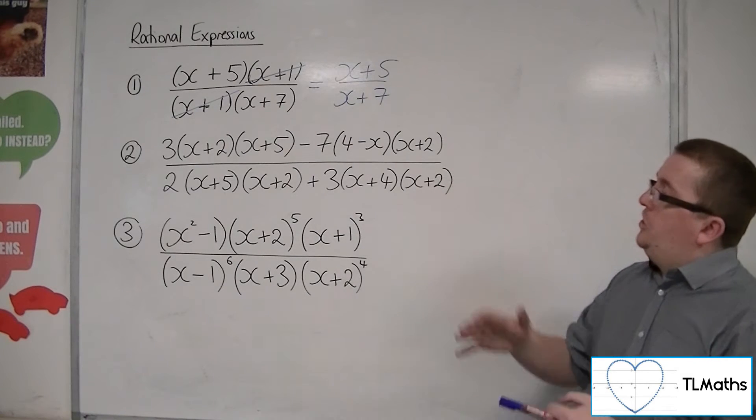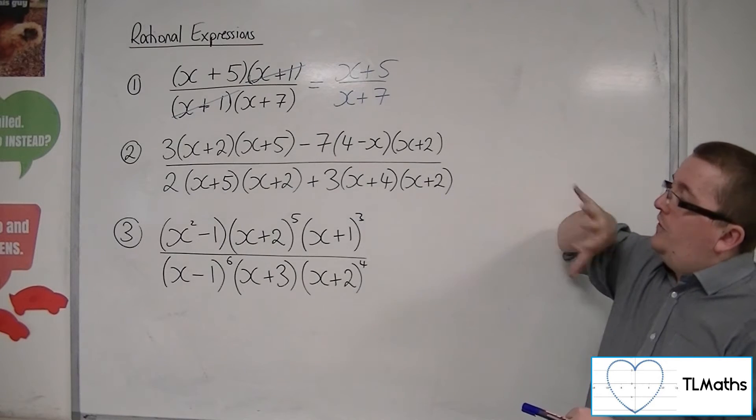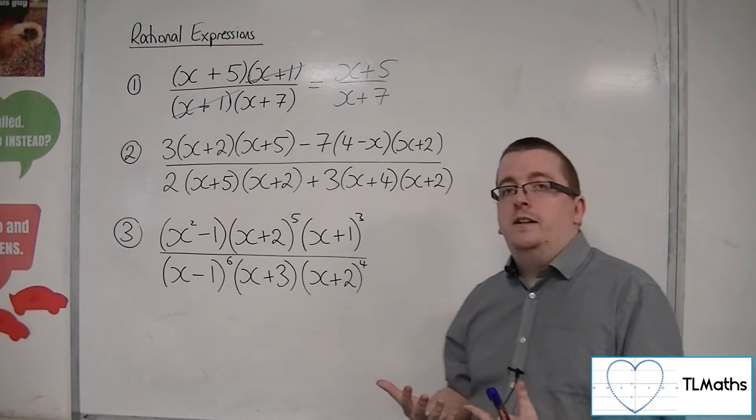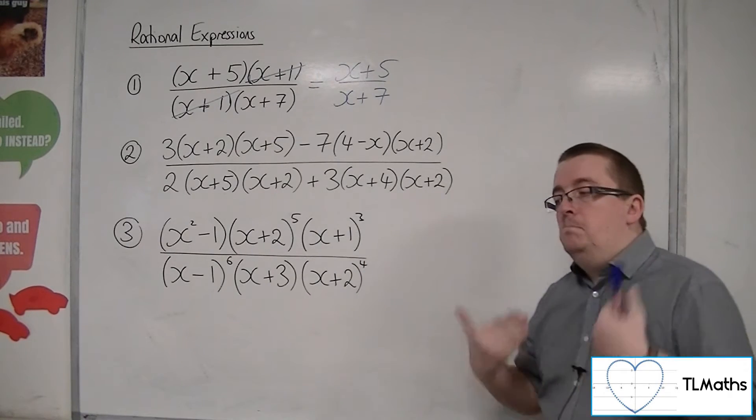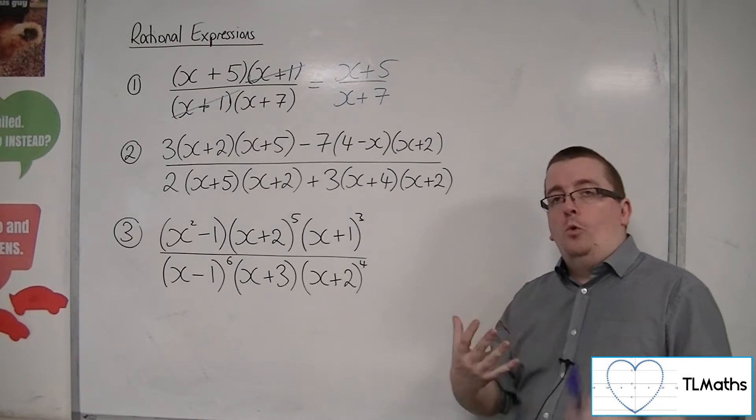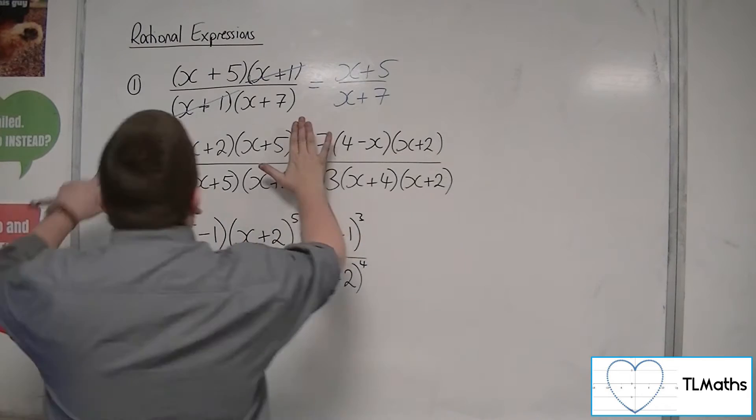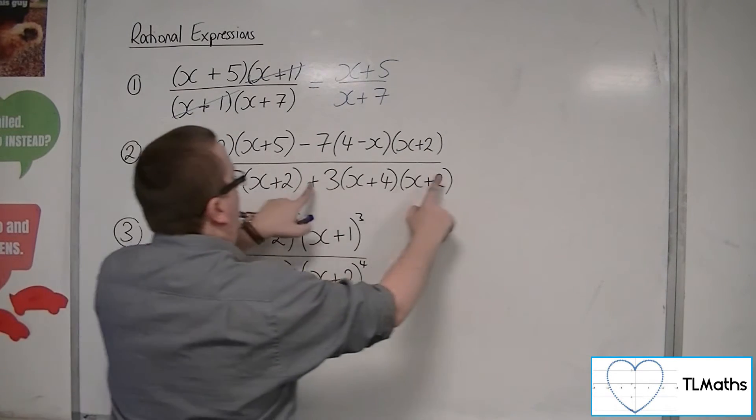Now for number 2, we've got something that looks absolutely horrible, but once again, you're looking for a common factor to both the numerator and denominator. Now the common factor must be common to all 4 terms that are there. There are 4. There's this bit here, that bit there, that one, and that one.